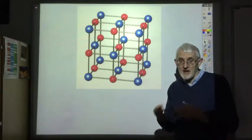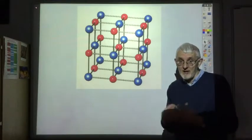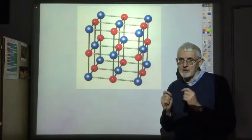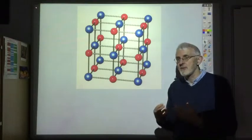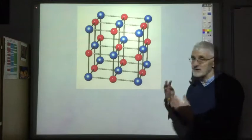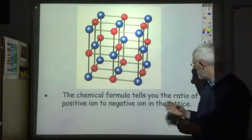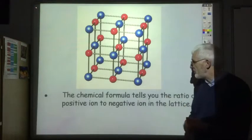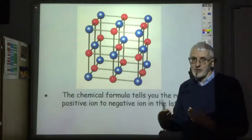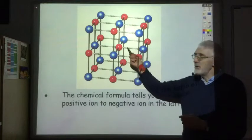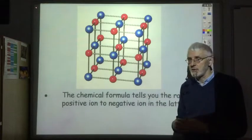Contrast that with water, H2O, which literally is one oxygen atom and two hydrogen atoms. For ionic compounds, the chemical formula just tells you the ratio of positive to negative ions in the lattice. For sodium chloride it's one to one, so you may have a billion sodium ions and a billion chloride ions.